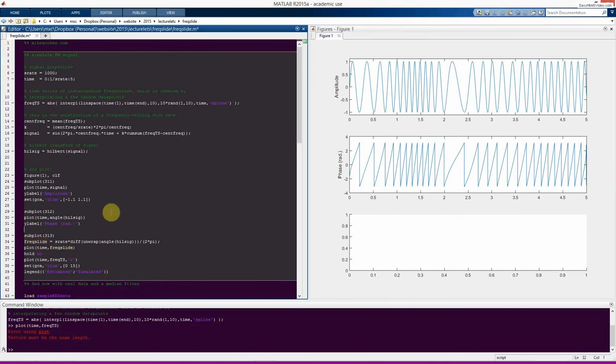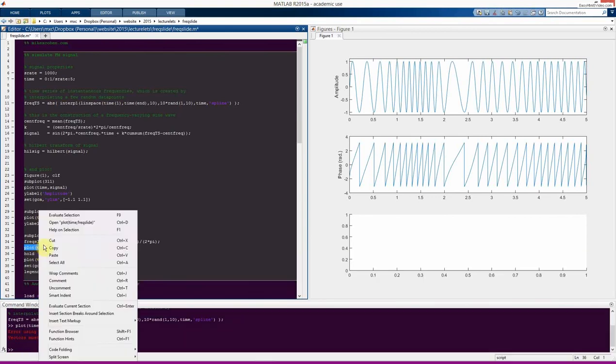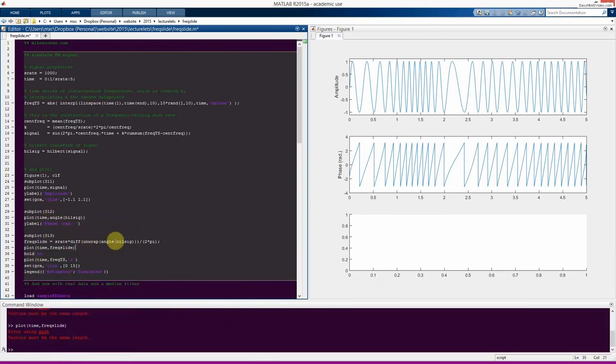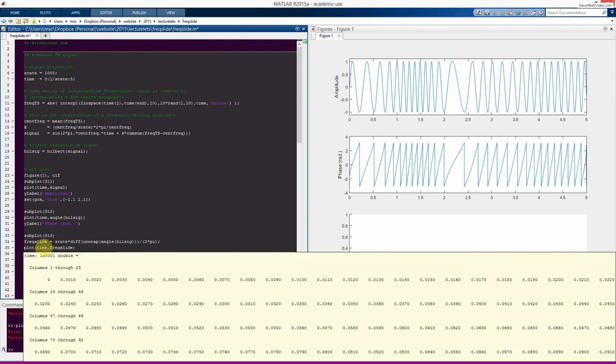But we don't see anything here and we get an error that the vectors must be the same length. So if you like you can pause the video take a minute and see if you can figure out what is causing this error and how to fix it. So we know that there's a problem with the plot function. It's really this one. So now we've done the first step of debugging our code which is to find exactly where the error is coming from. So now thinking about how the plot function works we need to input x and y points and those points have to match up to each other. And now the vectors must be the same length. So the error message is telling us that these two vectors are a different length. So we can look at time and see that is five thousand and one, whereas this variable freqslide is only five thousand.